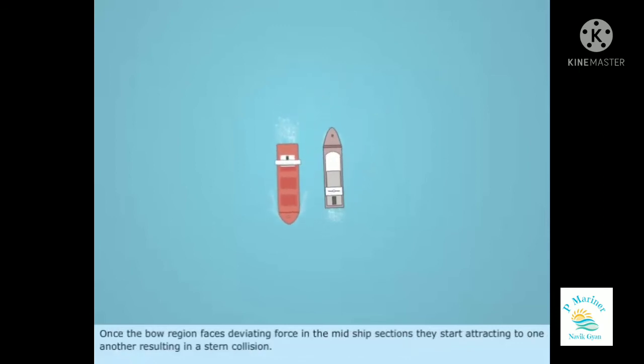Once the bow region passes, deviating force in the midship sections causes them to start attracting to one another, resulting in a stern collision.